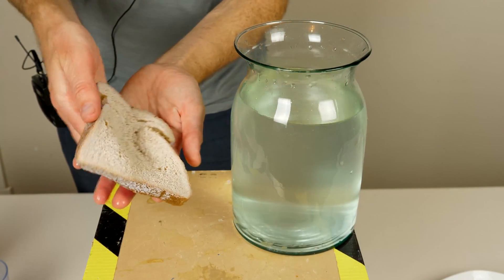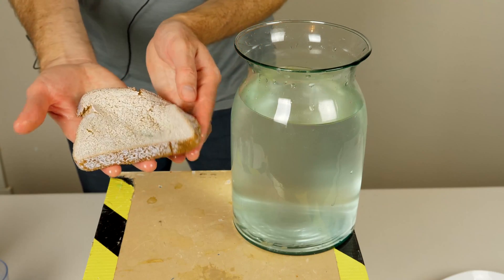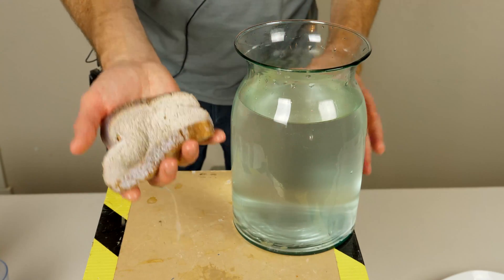This is weird. This is weird because normally the bread just falls apart when you get it wet, but this is staying together. It's kind of like a bread sponge right now.